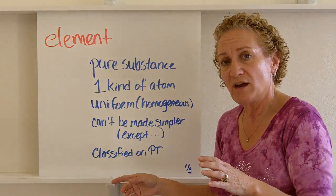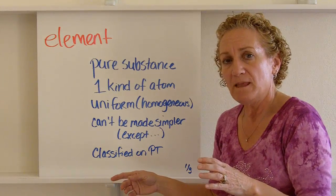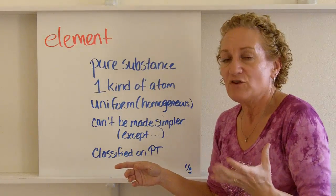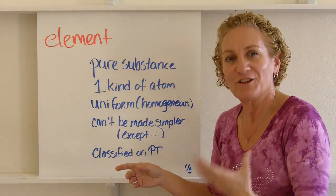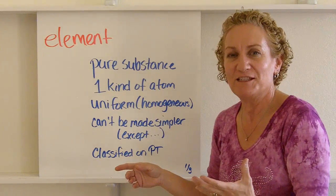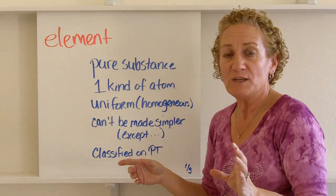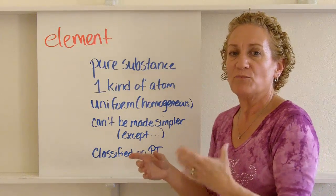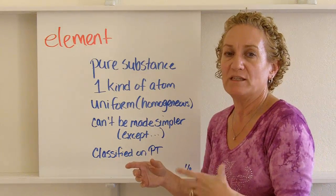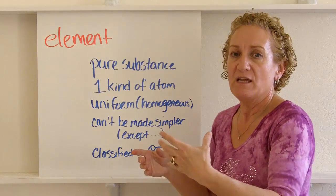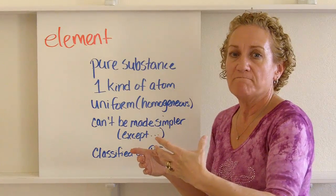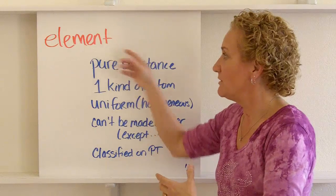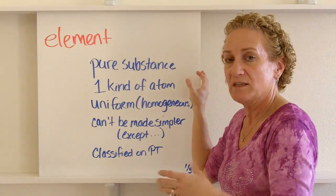Elements are classified on the periodic table. If you're not sure, take a look at the periodic table and see if it's on there. Don't just assume something is an element — a lot of people assume brass is an element, but it's not, it's a mixture. If it's on the periodic table, it's going to be an element.